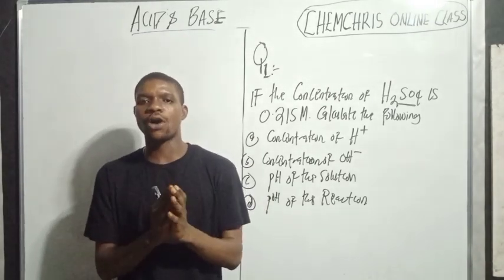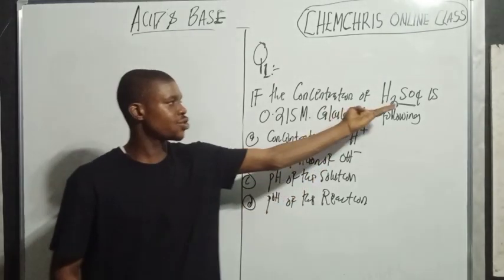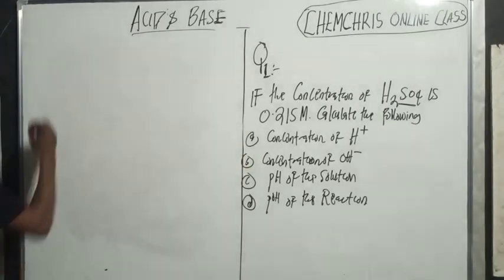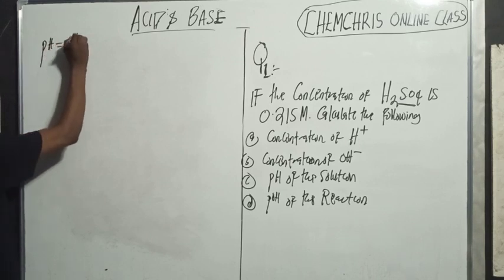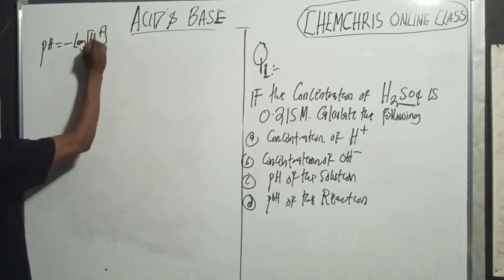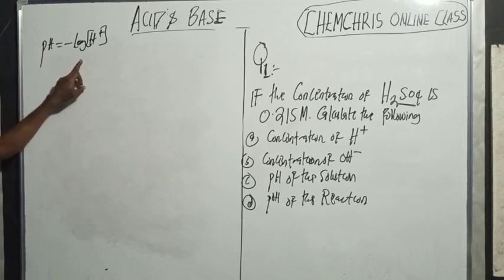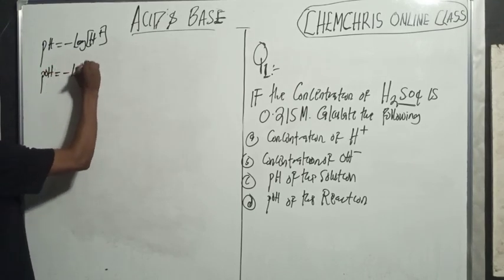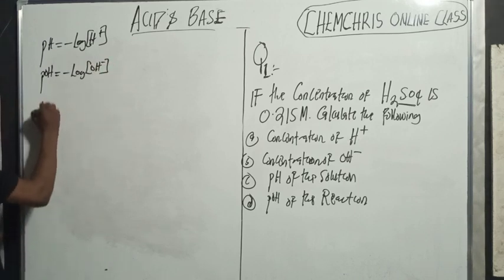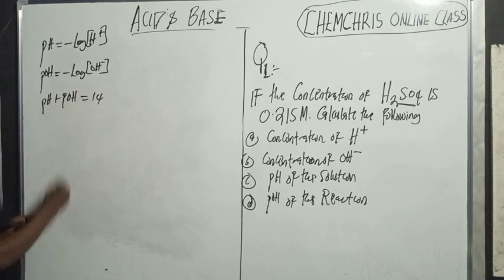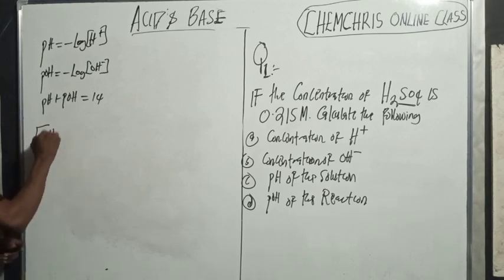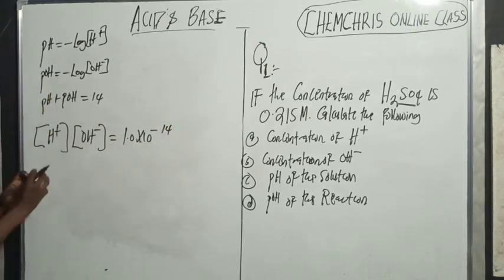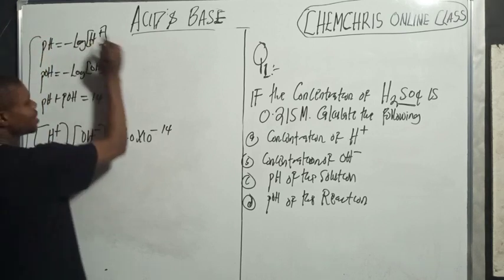The approach for solving a strong acid versus a strong base are different. Because we have a strong acid here, let's understand the formulas you can use. First: pH = -log[H⁺]. Second: pH + pOH = 14. Third: [H⁺][OH⁻] = 1.0 × 10⁻¹⁴. These are the various formulas you can use in calculating these questions.